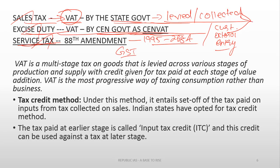One could ask: we already have a taxation system with VAT, so why is there a need for GST? GST is again a VAT model of taxation — it follows the input tax credit system. It is a multi-stage tax which follows the input tax credit system. The question is: what major reforms did GST bring, and what is the difference in GST?